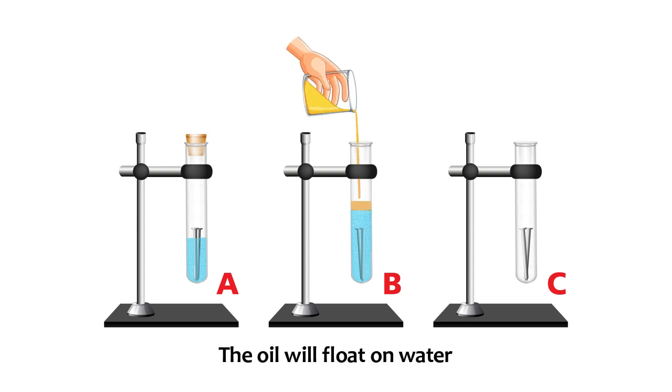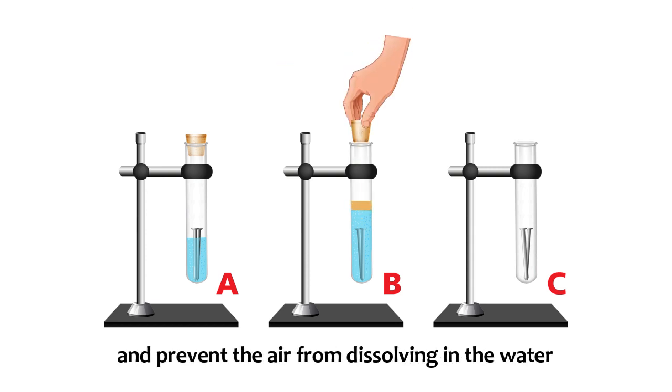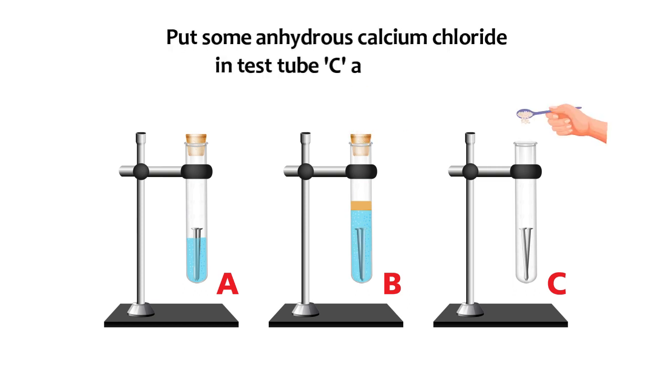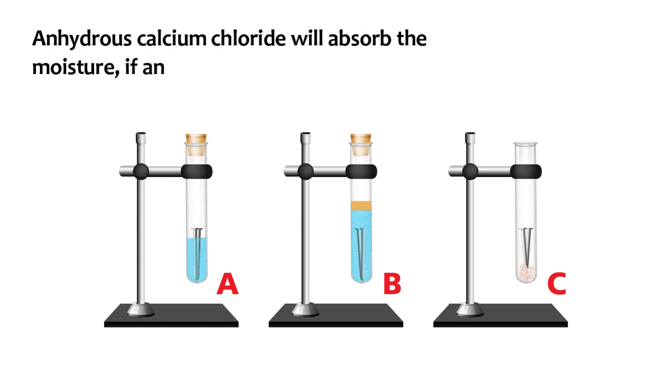The oil will float on the water and prevent air from dissolving in the water. Put some anhydrous calcium chloride in test tube C and cork it. Anhydrous calcium chloride will absorb the moisture, if any, from the air.